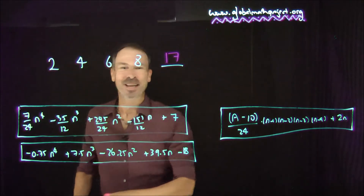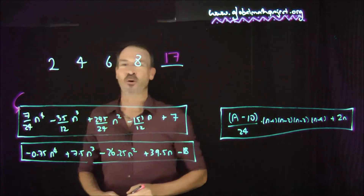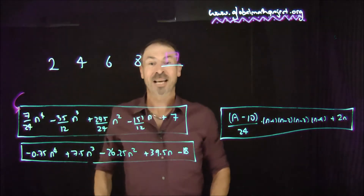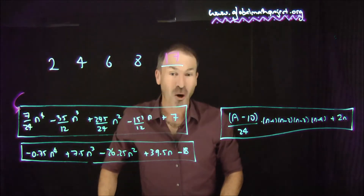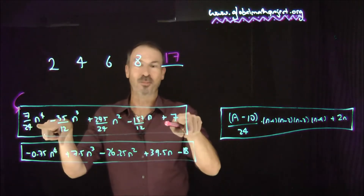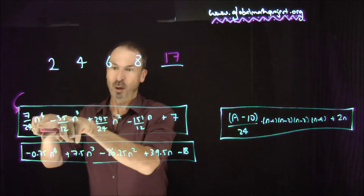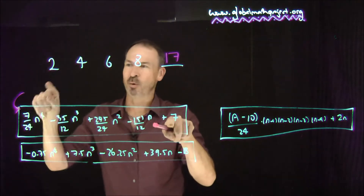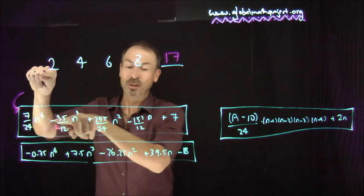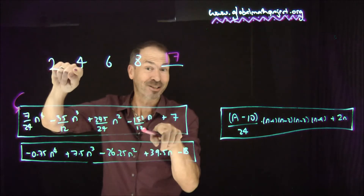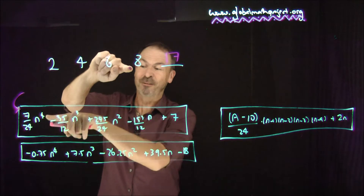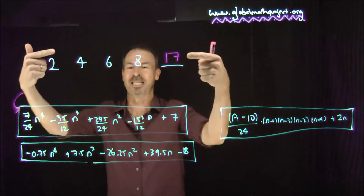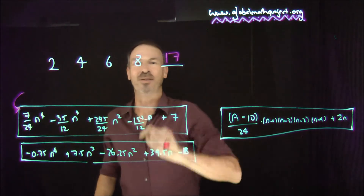How do I know it's 17? Because I've decided this sequence is following this particular formula: (7/24)n⁴ − (35/12)n³ + (245/24)n² − (151/12)n + 7. If you put n=1 in, despite all the fractions, you get 2. Put n=2, out comes 4. Put n=3, out comes 6. Put n=4, out comes 8. Put n=5, and out comes 17. So clearly this formula produces that sequence — therefore the next number is 17.